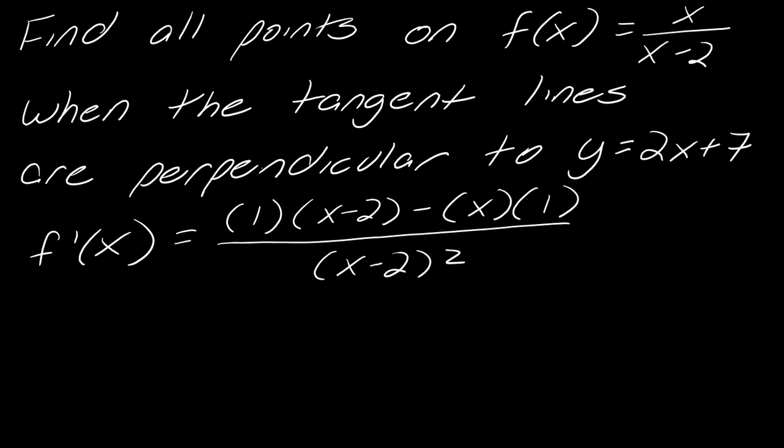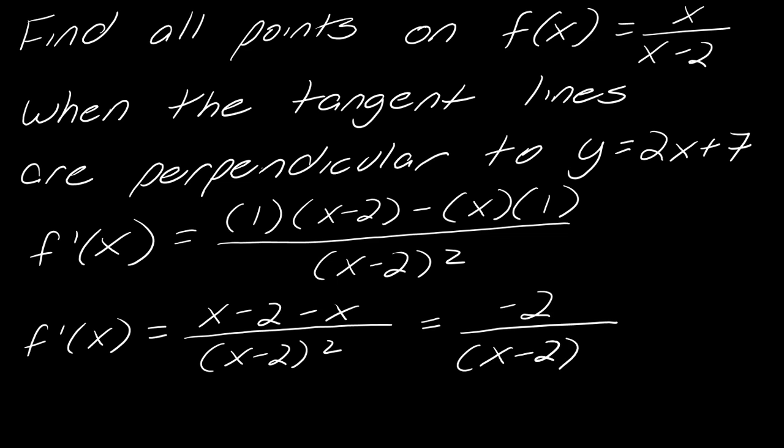So first let's just get this all nice and simplified. So this becomes x minus 2 minus x over x minus 2 squared. So ultimately, it looks like my derivative will just be negative 2 over x minus 2 squared. Okay, so there's our derivative.